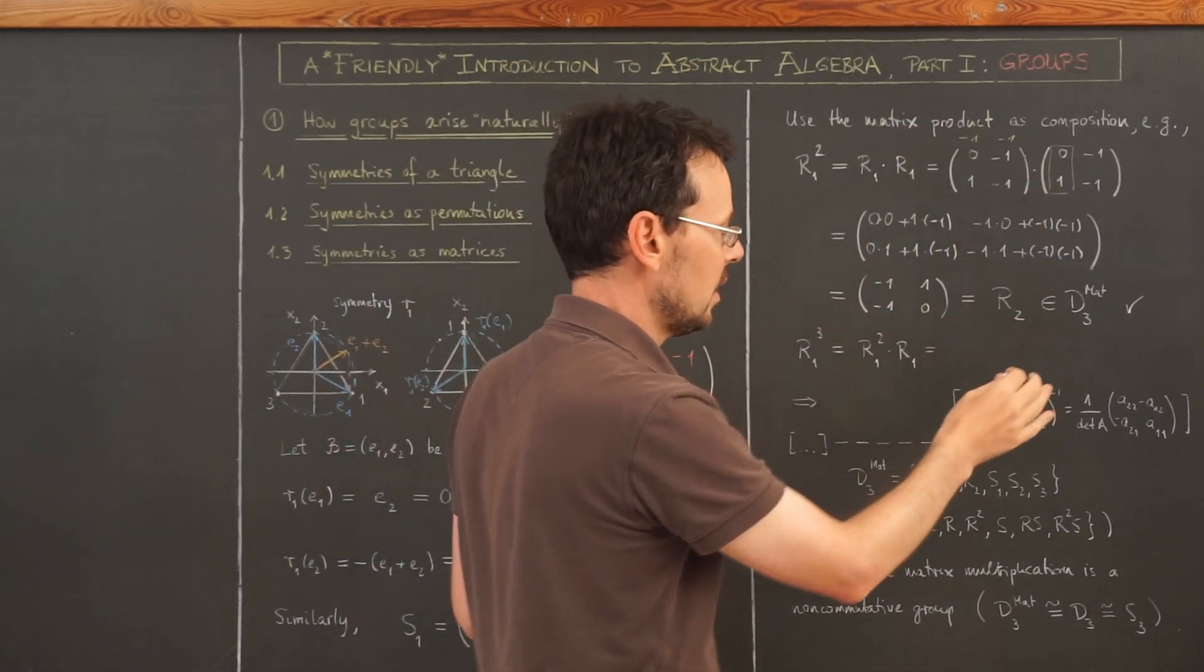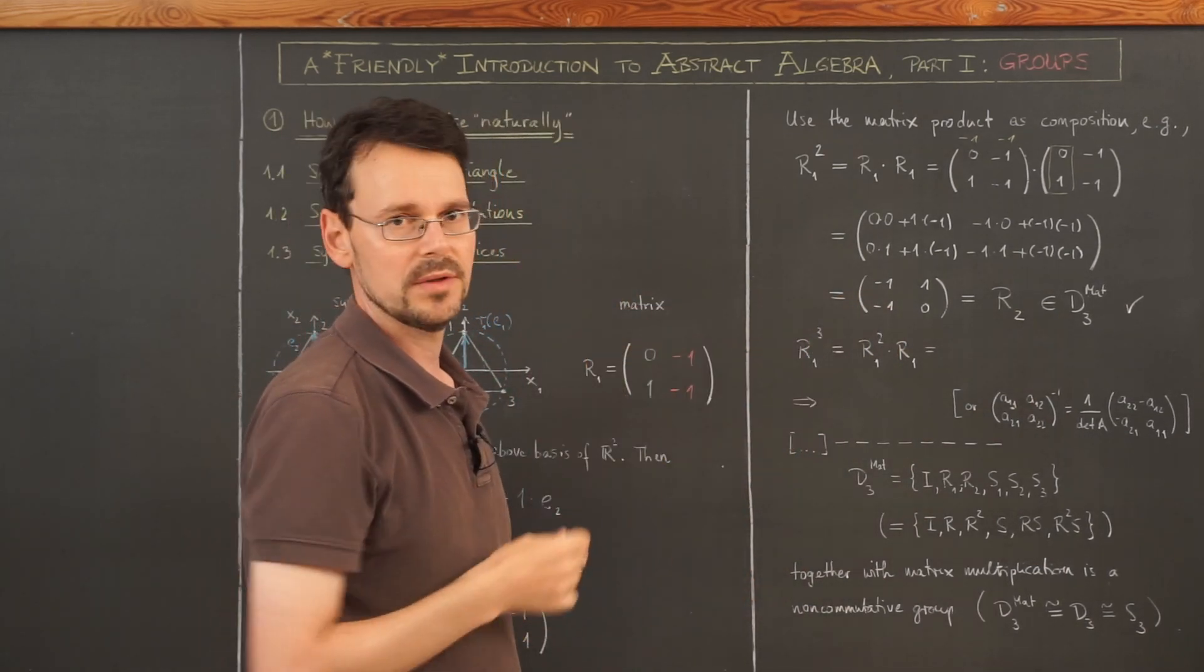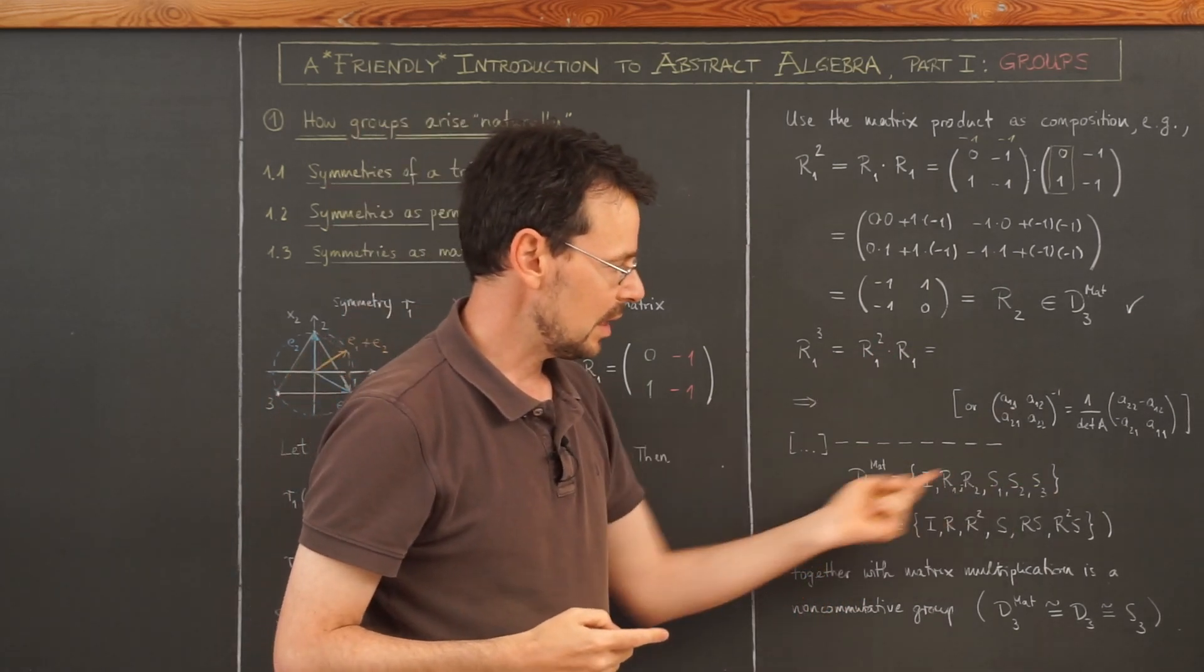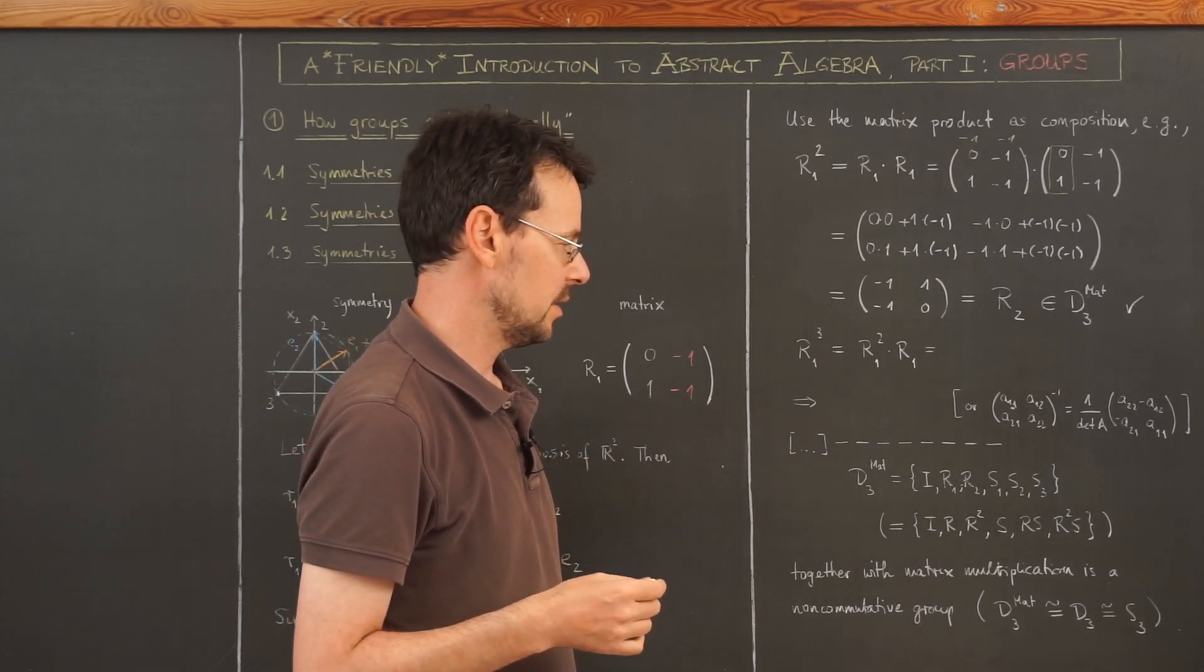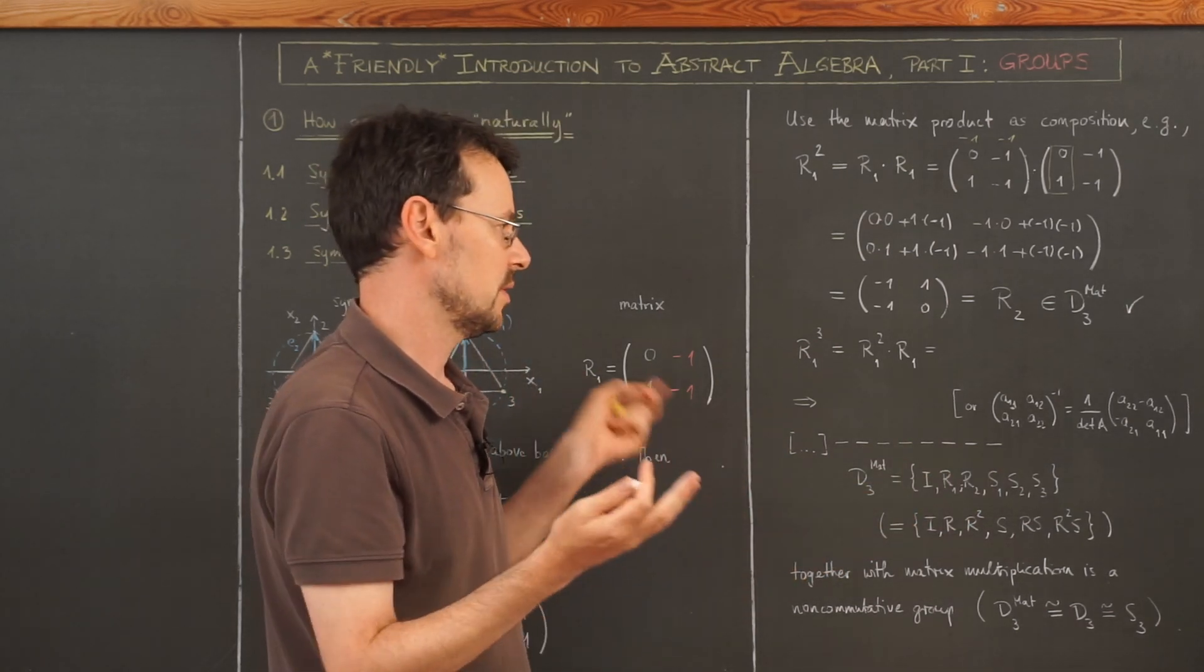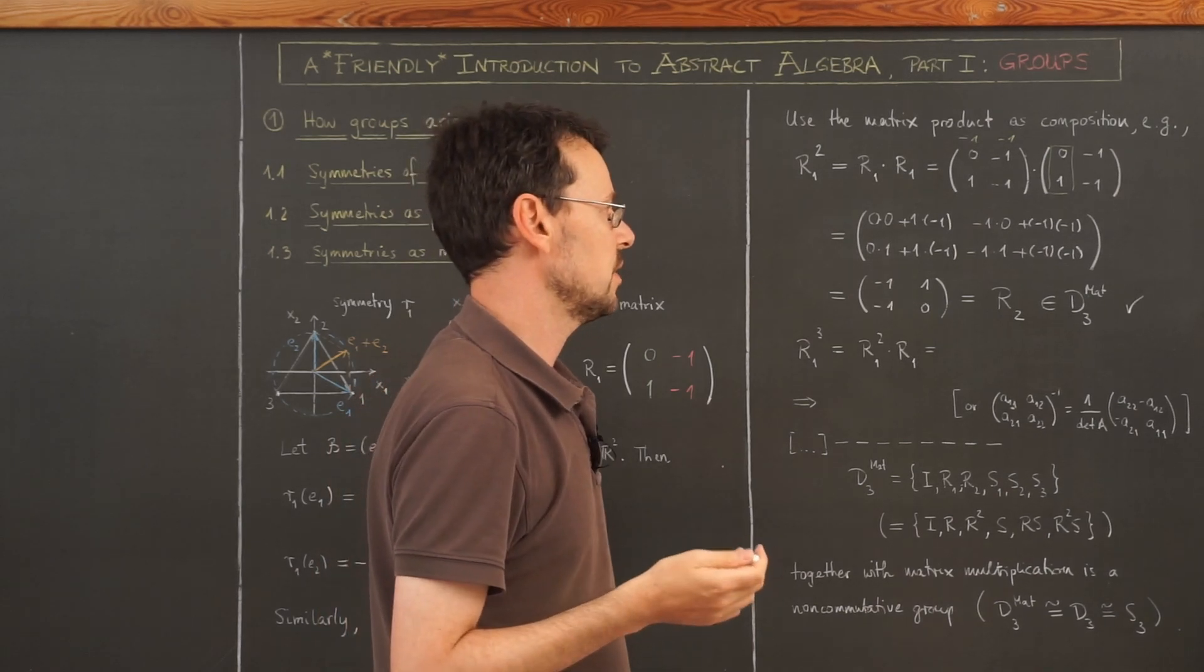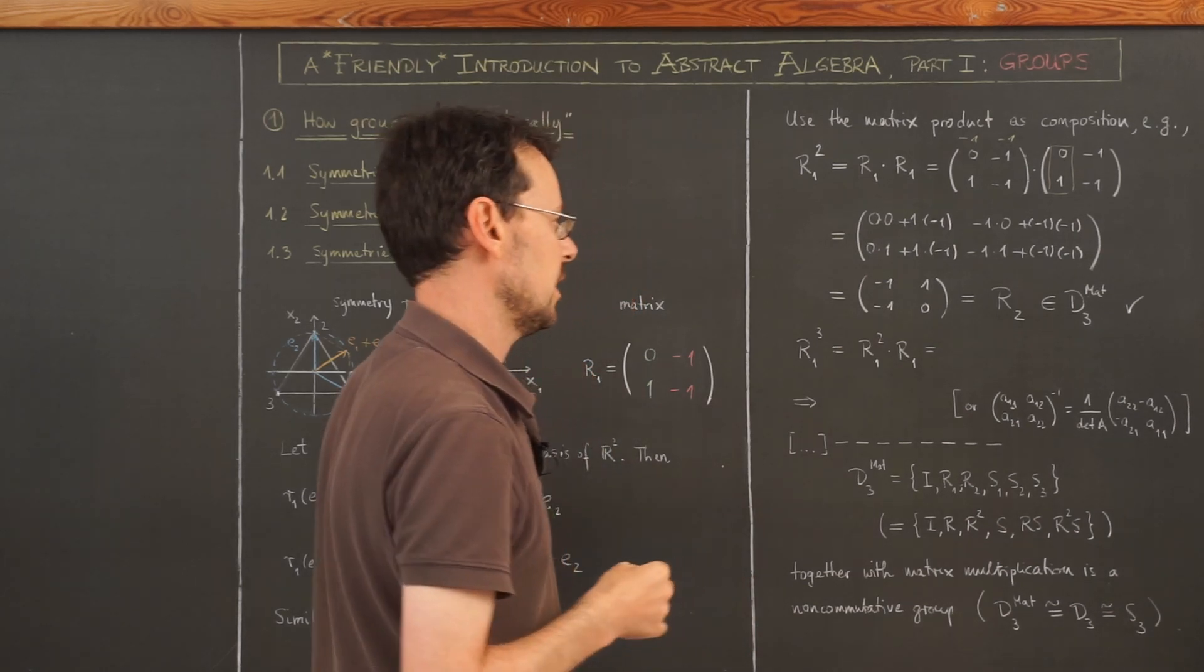But here in this setup, we want to focus on the matrices and forget at least a bit about the geometric background. So you actually would have to check that if you take all these products here, you always end up with an element of this set here. The details, as I've said before, are left for problem set number three. And of course, you do not have to compute all the matrix products because that is pretty tedious and you don't really learn anything by it. But if you're new to linear algebra and haven't worked with matrices so much before, then I think computing here two or three matrix products is a nice exercise.